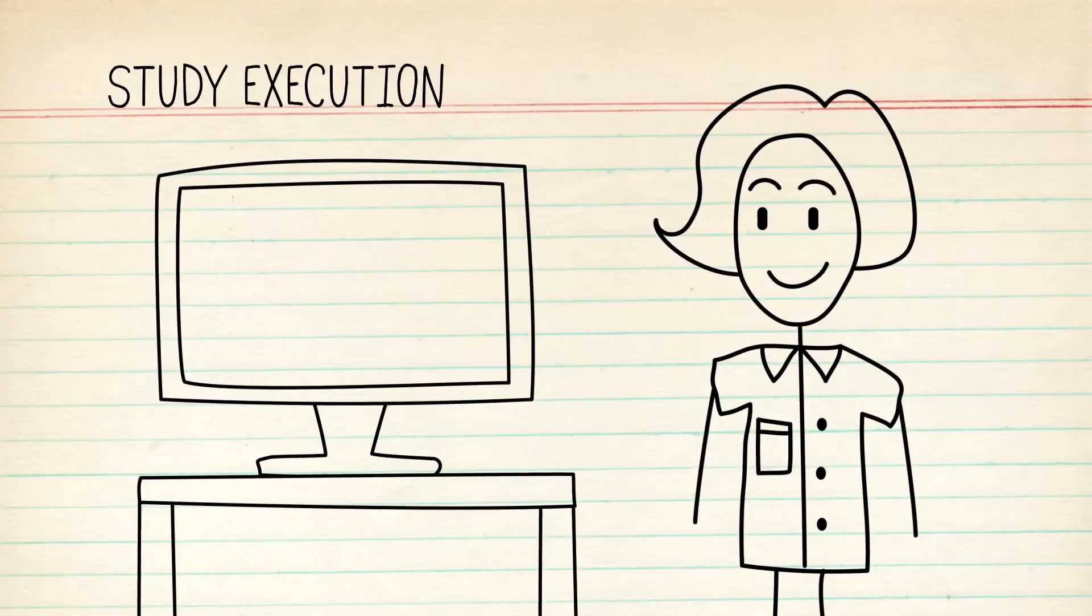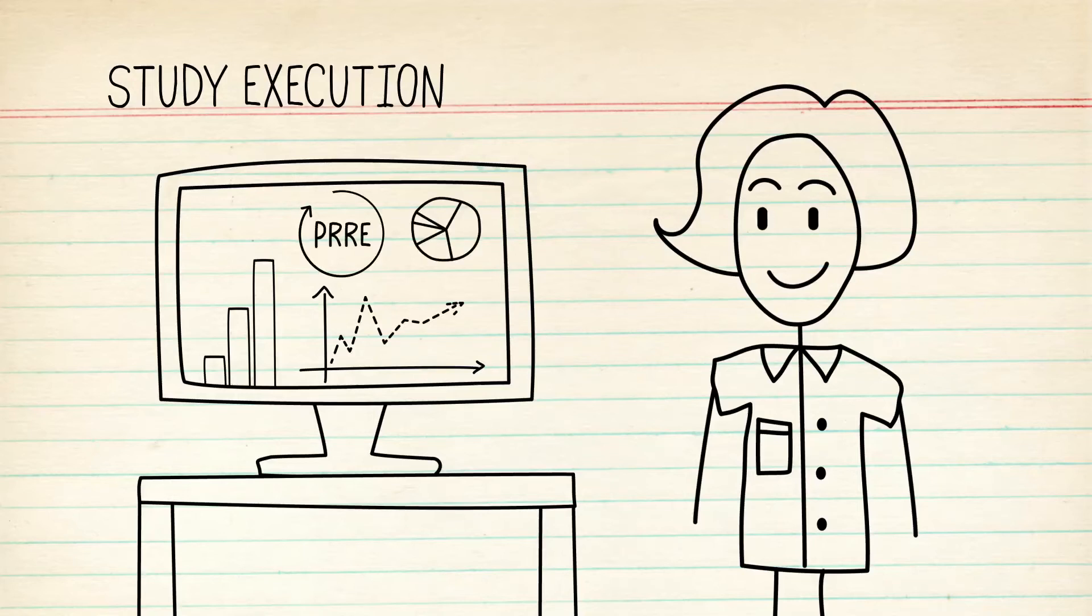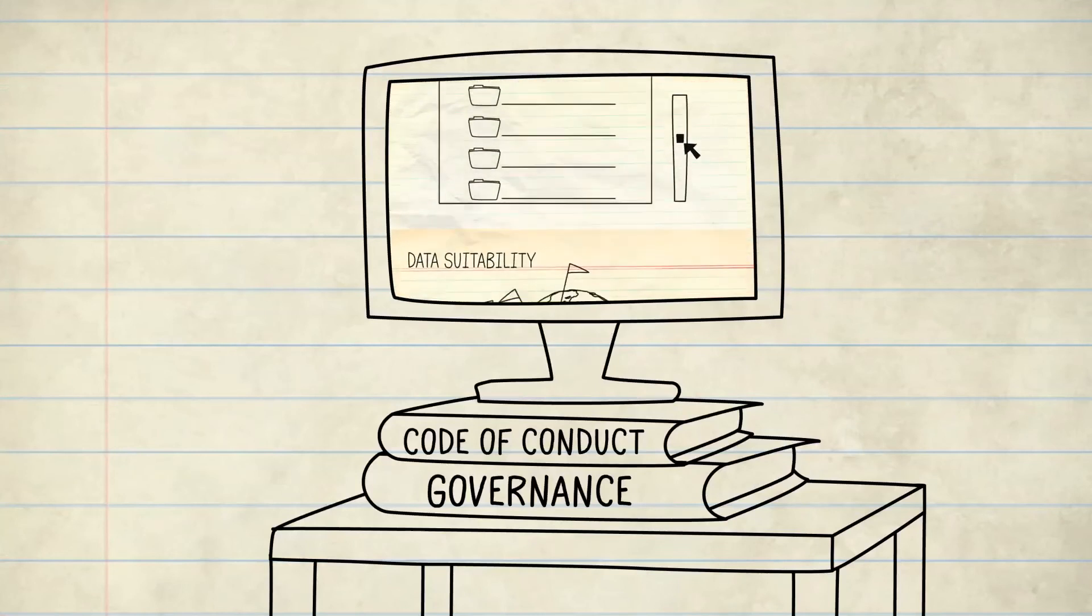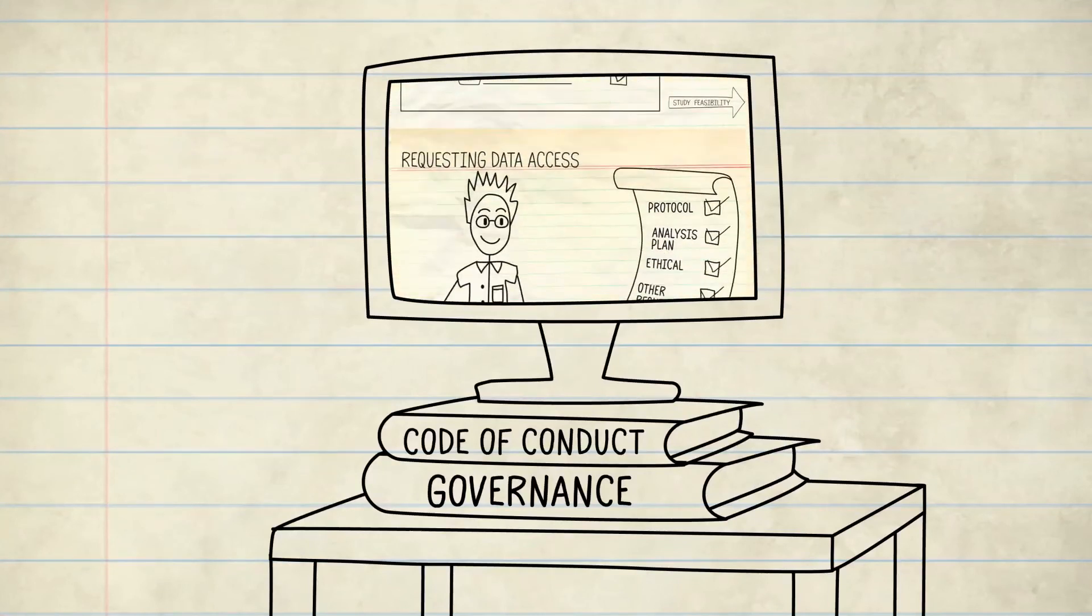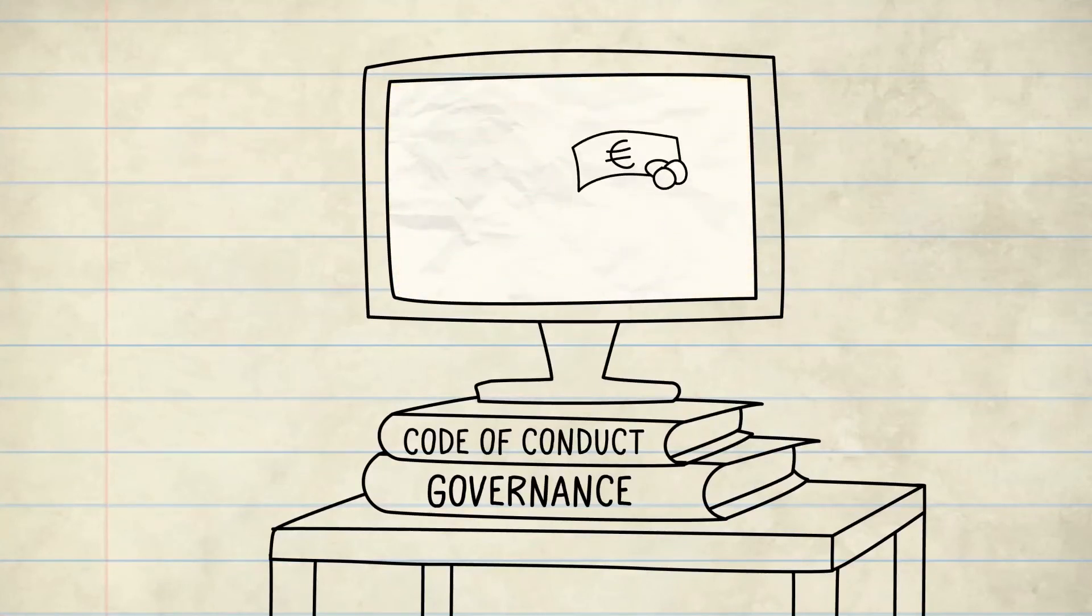Following a successful data access request, analysis can be performed via the data source or via a private remote research environment, PRRE, in which the researcher can analyse their pre-prepared, de-identified data themselves. A code of conduct and governance will support the whole process, with a transparent financial transaction system.